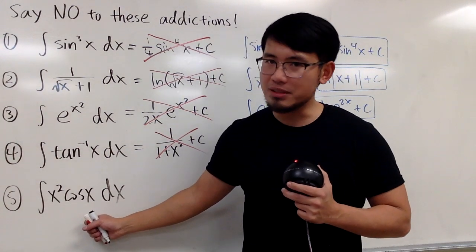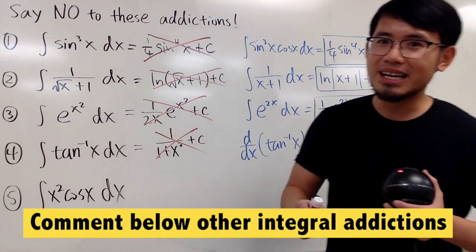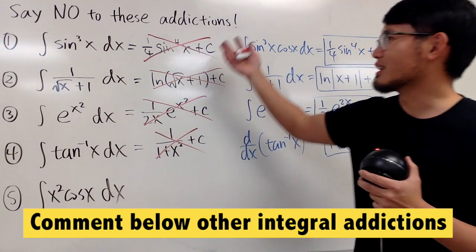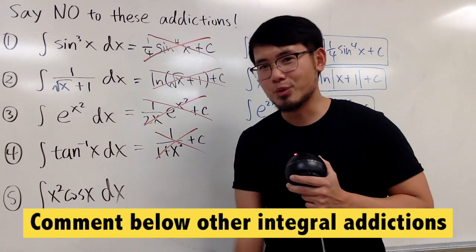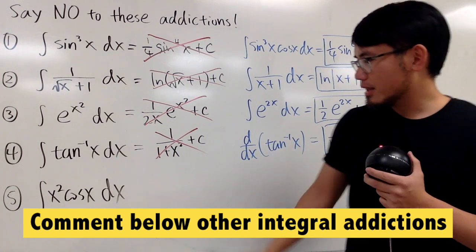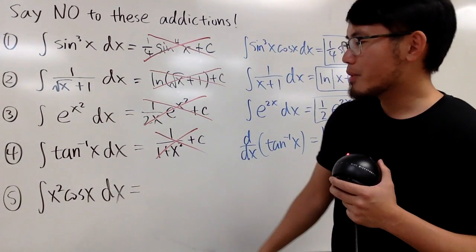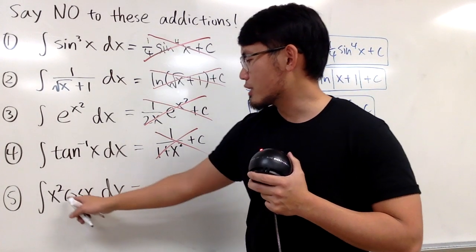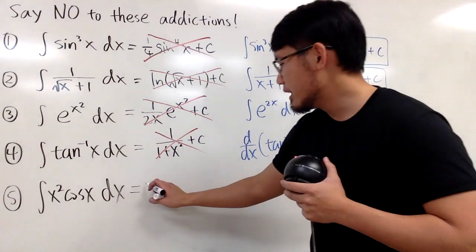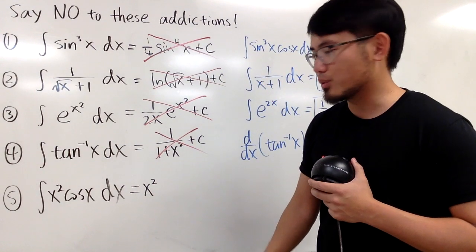Last one on this list — but I'm pretty sure this is not all of the addictions out there, so be sure to leave a comment and let me know what the common addictions are that people like to do. For this kind of question, some people say: this is x squared times cos x — maybe we can just pull the x squared out. Then they just say let's integrate x squared, but they don't even do the integral for x squared — they just bring it out.